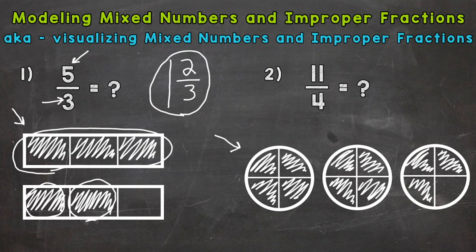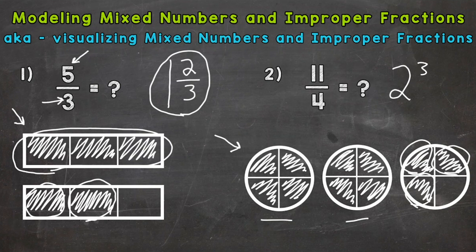Now we need the mixed number. We have two whole circles filled in, so that's going to be our whole number for our mixed number. Then we have one-fourth, two-fourths, and three-fourths as our fractional part. So two and three-fourths is our mixed number. That improper fraction, eleven-fourths, is equivalent to two and three-fourths. Our model represents both the improper fraction and the mixed number — they are equivalent. One's just an improper fraction, and one's a mixed number.